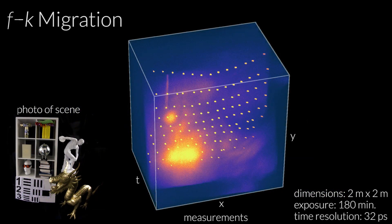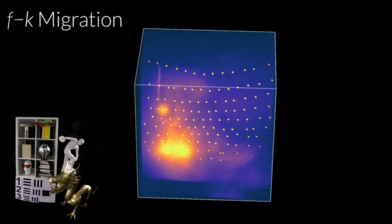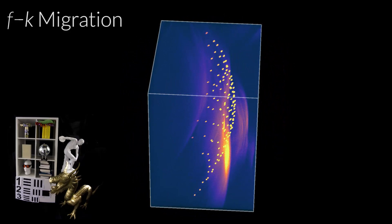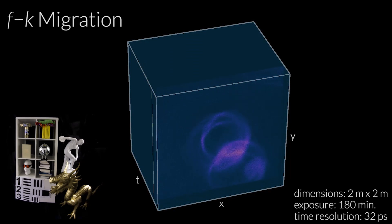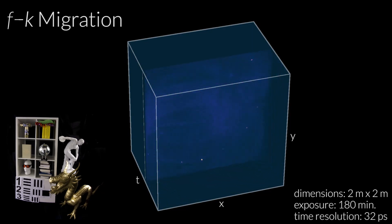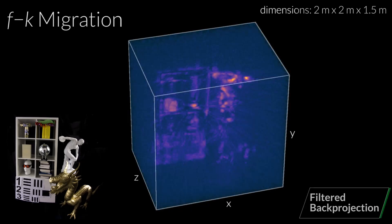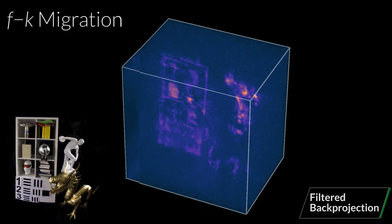To demonstrate our method, we build a hardware prototype capable of scanning room-sized scenes and capturing outdoor results. Here is a set of confocal measurements captured for an indoor scene. If we play the measurements over time, we can directly visualize light from the hidden volume splashing against the wall like ripples on a pond. Also note the bright specular flashes from the disco ball. Here is a comparison of the reconstructed 3D volume with each of these methods. Note that FK migration produces a clean, high quality result.